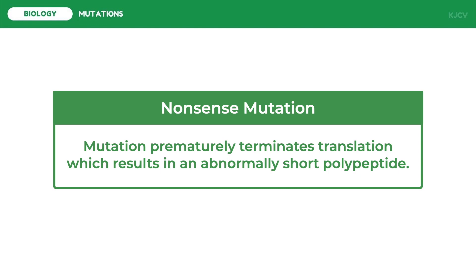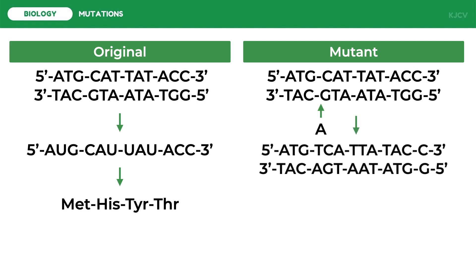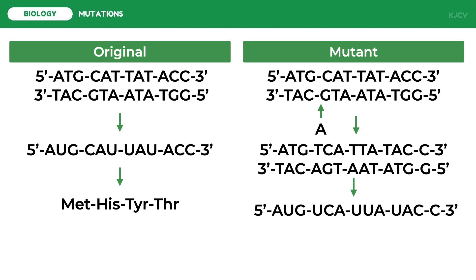Aside from replacing nitrogenous bases, mutations can also occur by inserting or deleting a base pair. If we add adenine in between the first and second codons, it results in a shift of the downstream codons. For example, the original second codon GTA in the template strand becomes AGT after inserting adenine. This affects transcription, and the resulting polypeptide chain is significantly different from the original — for example, producing methionine-serine-leucine-tyrosine. This leads to a more disastrous effect on the resulting protein than substitutions typically do.